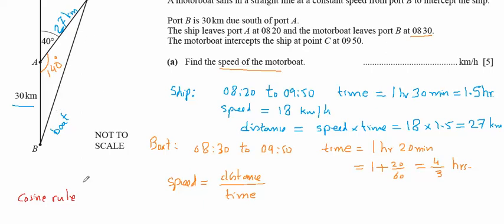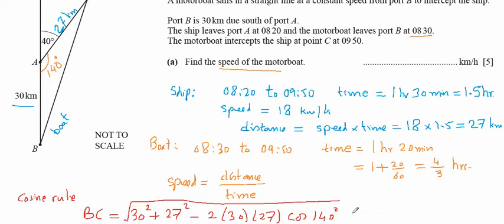Cosine rule means that this length BC is equal to square root of the sum of squares of the other two sides. So 30 square plus 27 square minus 2 times the first length into the second length into cosine of the angle between them which is 140. And the square root. So after calculation we will get this length BC 53.57 with more decimals.